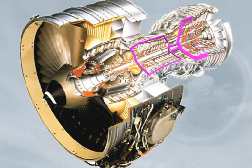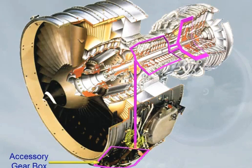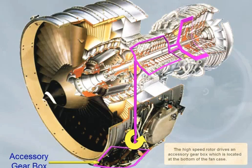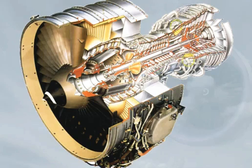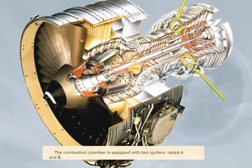The high-speed rotor drives an accessory gearbox, which is located at the bottom of the fan case. The combustion chamber is equipped with two igniters, called A and B.